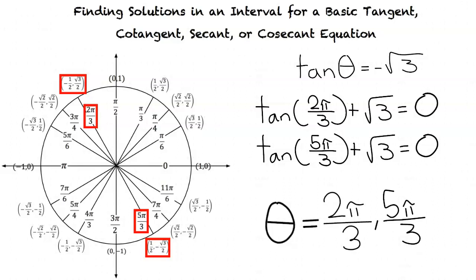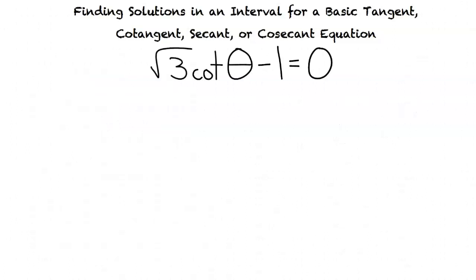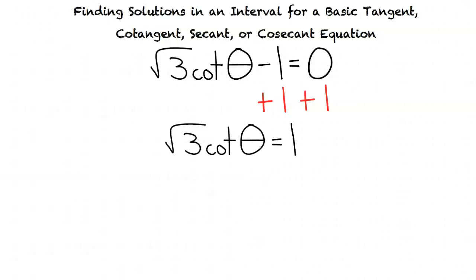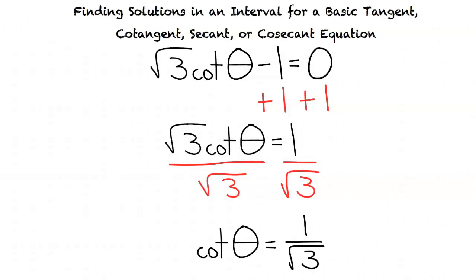Now that we have finished an example for our tangent equation, our next problem is a cotangent equation. We will use the following cotangent equation: square root of 3 times cotangent theta minus 1 equals 0. To isolate cotangent theta, we first add 1 to both sides, giving square root of 3 cotangent theta equals 1. Next, we divide both sides by square root of 3 to eliminate the coefficient, resulting in cotangent theta equals 1 over square root of 3.